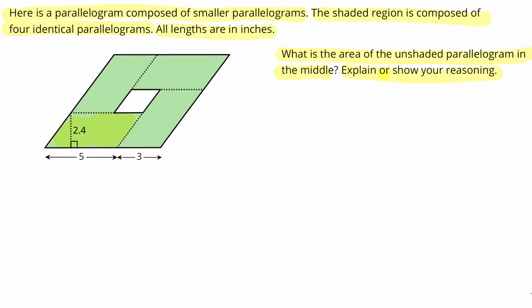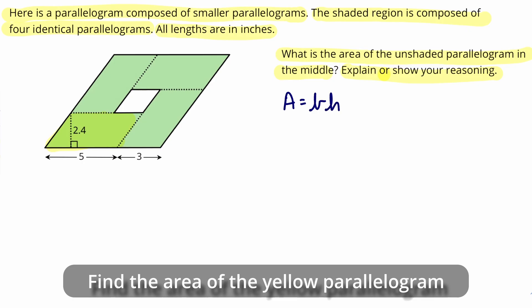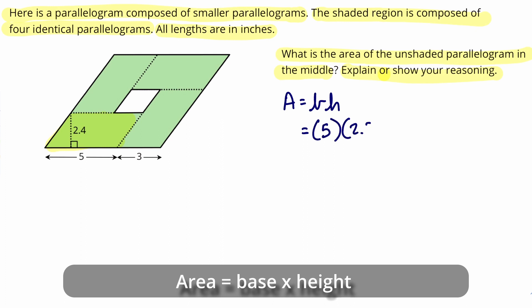All right, let's shade that in yellow so we know what we're talking about. We're going to find the area of this shaded parallelogram. We know area is base times height. We know the base to be 5 and the height running perpendicular from the base is 2.4.